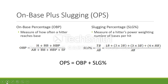On-base percentage measures how often a hitter reaches base, whether through a hit, walk, or being hit by a pitch. Slugging percentage measures power by evaluating total bases reached per at-bat. So if a player hits a double, which requires more power than a single, they reach two total bases rather than one. OPS is just a combination of the two.